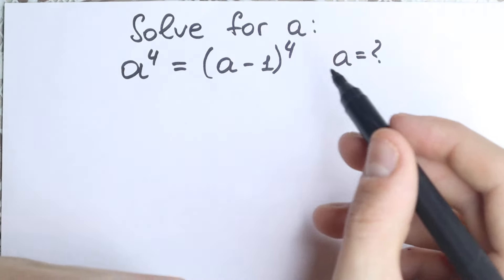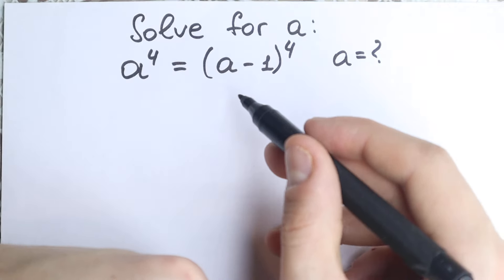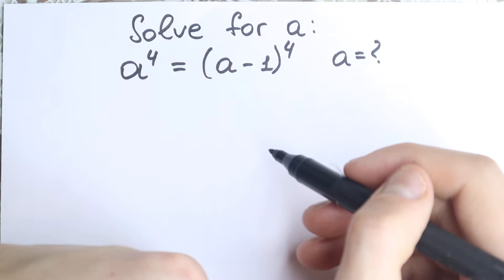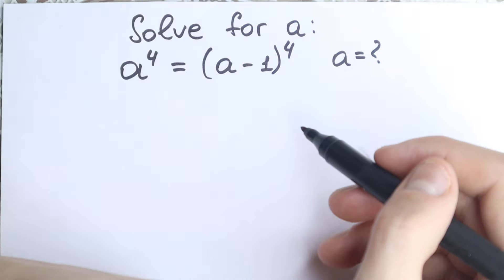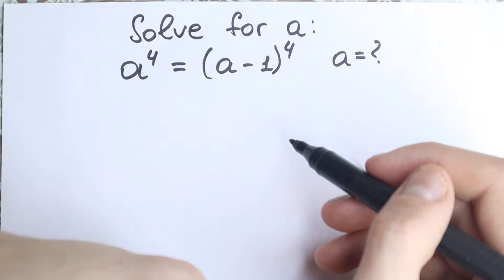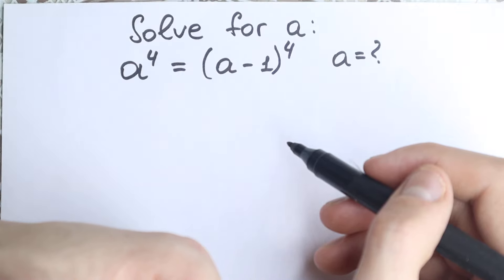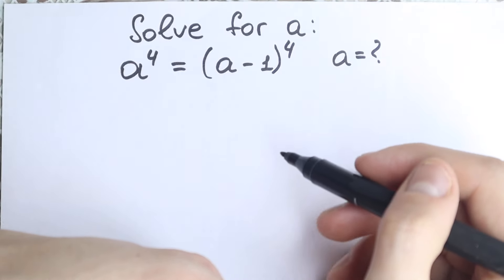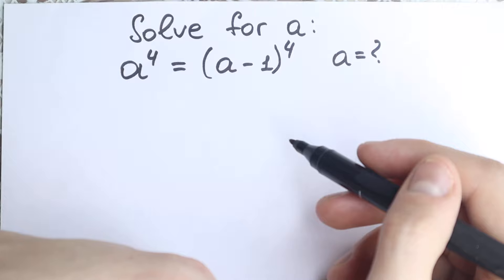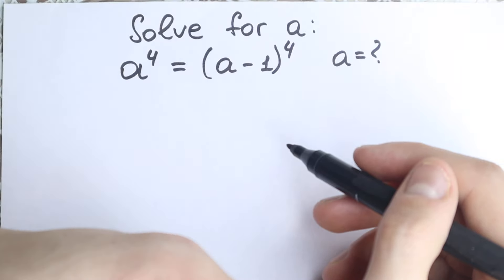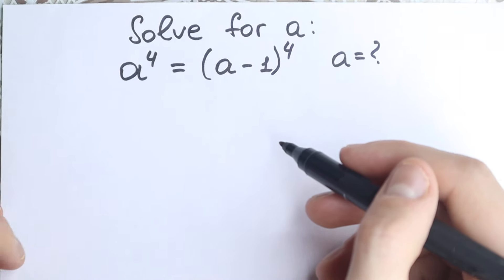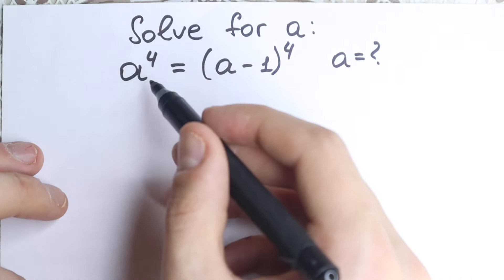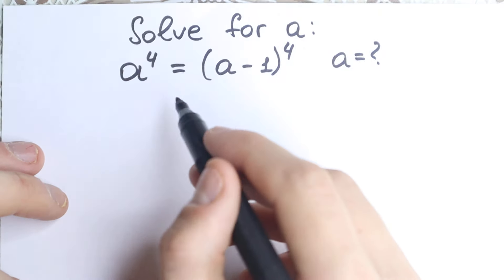But what about the solution to this problem? Maybe a lot of students can see the obvious root right here. But in math we need to solve it correctly and step by step. The most common mistake right here is to take the fourth root from both sides.